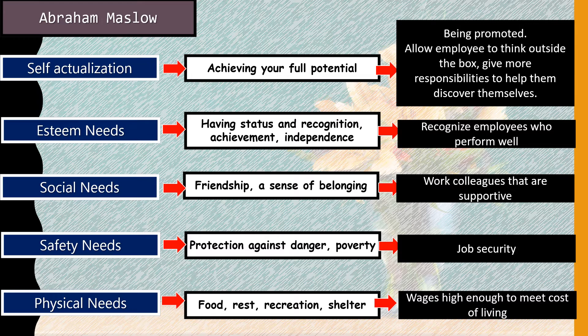Organizations can also support self-actualization by providing new skill training, promoting employees to show them they can do more, and giving them opportunities to discover themselves and develop new ideas. These are practical steps companies can take to help employees who may fall into any one of these need categories — or more than one.